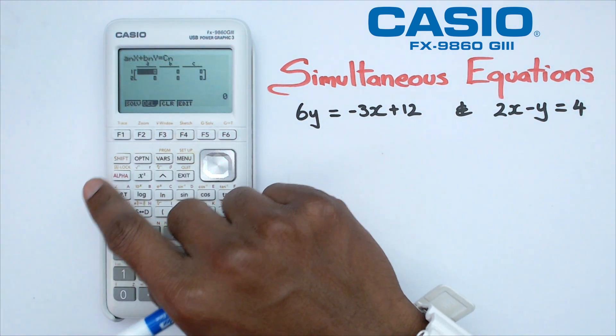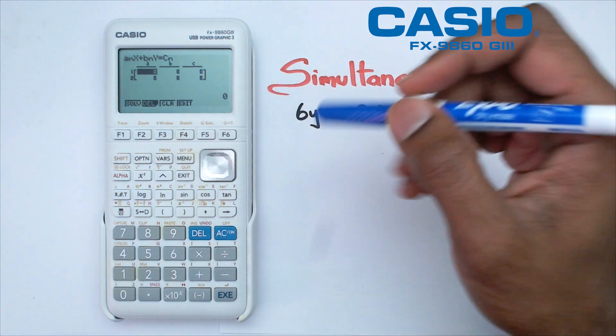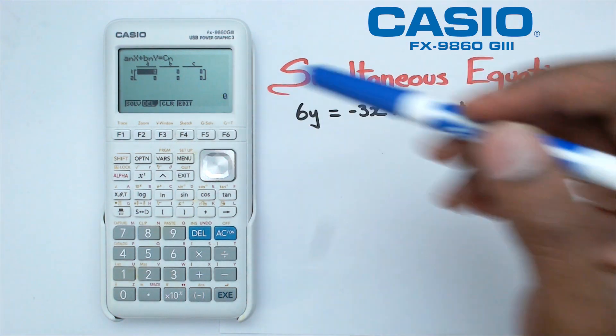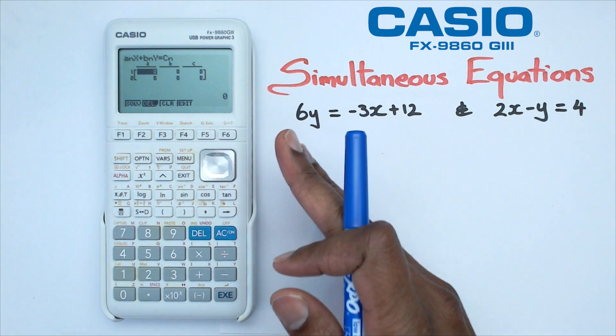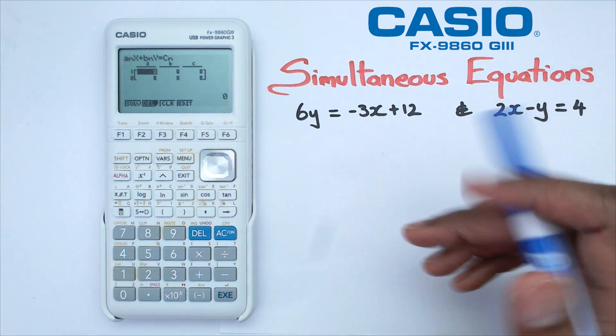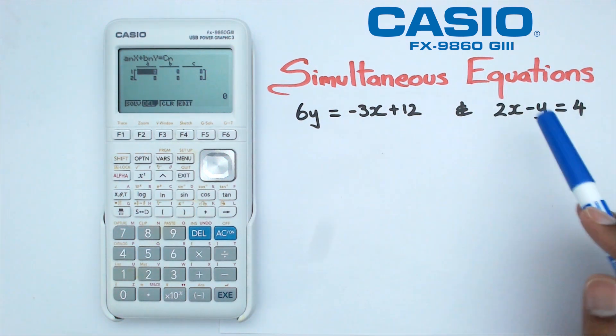Now before we enter these equations into the calculator, there is something we must actually do. We have to write it in the format of X, Y, and then the number by itself. Now, if you look at the second equation here, that has X, Y, and the constant by itself.